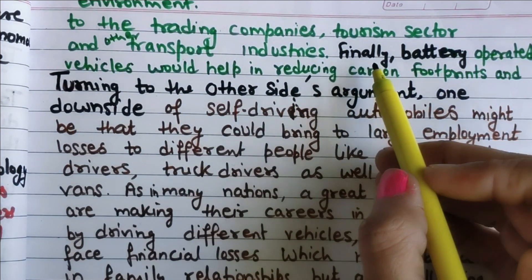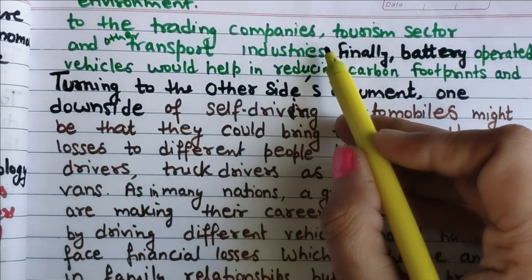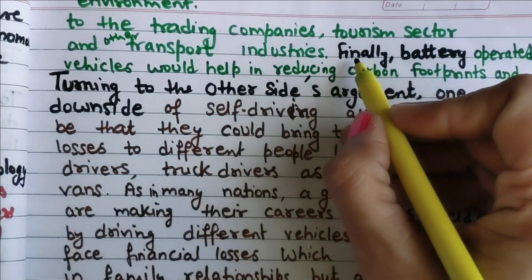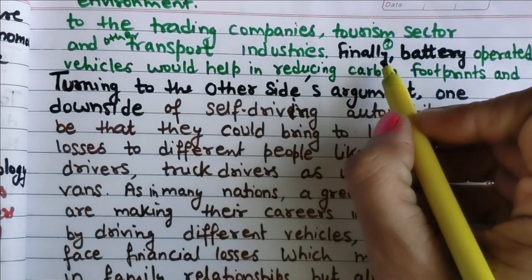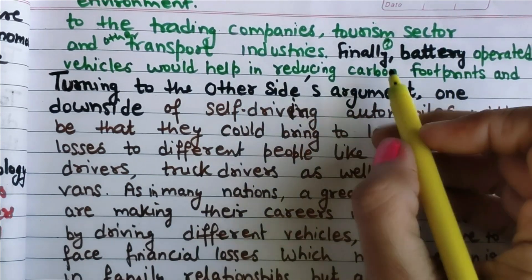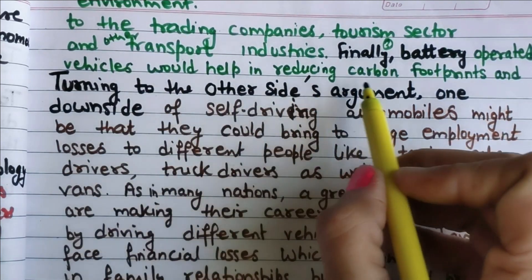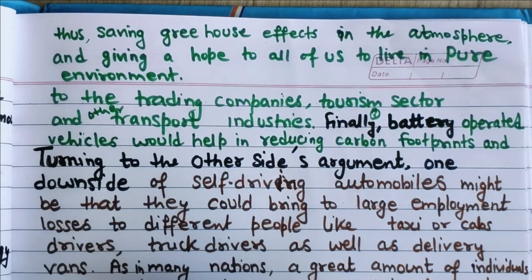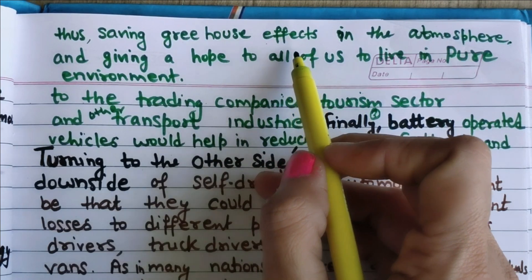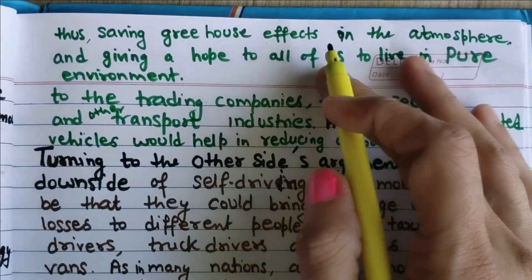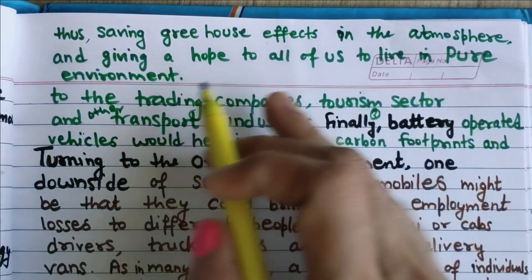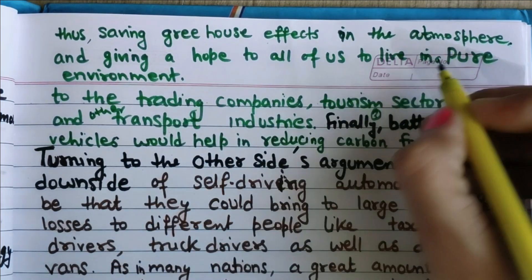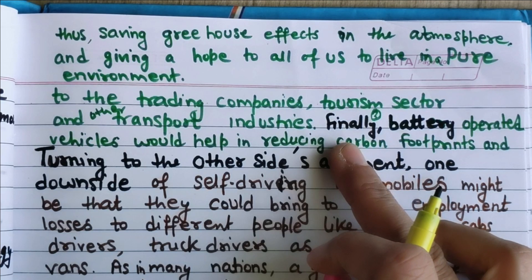'Finally, battery-operated vehicles would help in reducing carbon footprints, thus saving greenhouse effects in the atmosphere, and giving hope to all of us to live in a pure environment.' This is my third advantage point explained in the body paragraph. So three points have been explained for advantages.